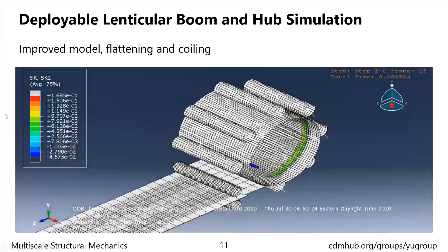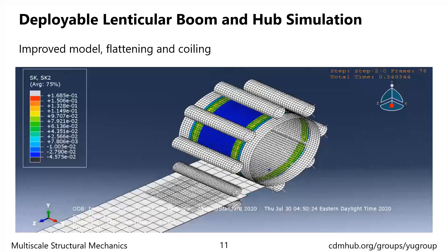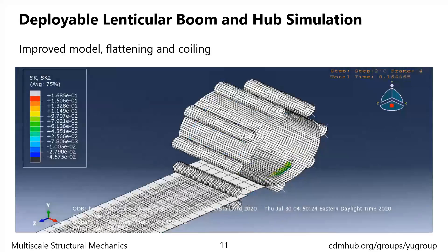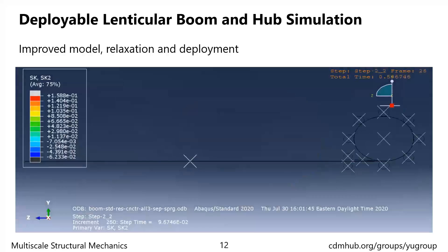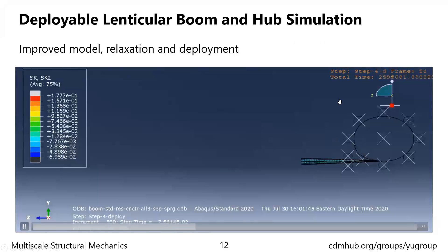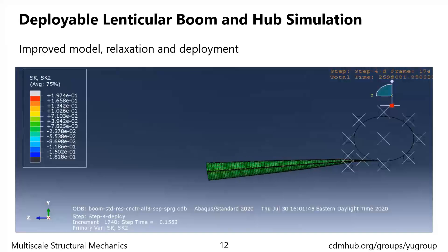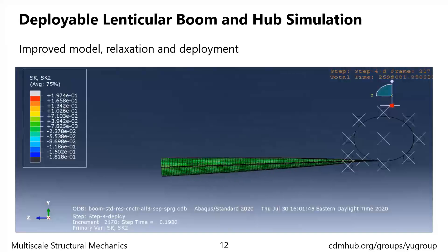Here shows the flattening and coiling of the boom in the improved model. First, the plate is moved up to flatten the boom. Then the boom starts to coil around the hub. The length of the boom allows it to coil about one and a half circles. After coiling, we remove the tension force and the plates. After a storage time of six months, the boom starts to deploy. We can see that during deployment, the boom tends to pop out from the hub, which is a phenomenon not captured by the baseline model. After deployment, the boom is removed from the hub and goes through a recovery of 24 hours.